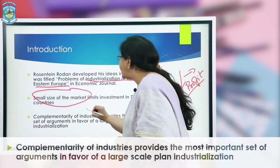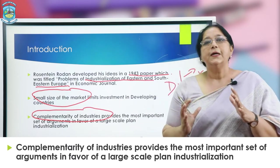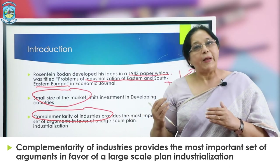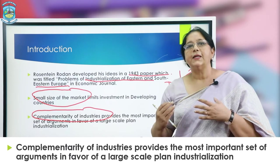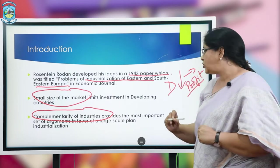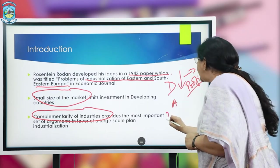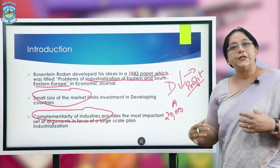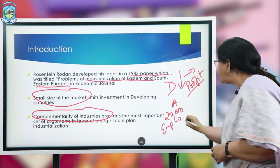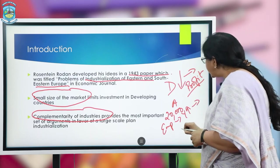Private investment happens with profit in mind, and because of lack of demand in the market, individual investments are not able to make profit. So he talks about complementarity of industries — industries need to be dependent on each other, mutually benefiting each other. He explains this with an interesting example of a shoe factory. Let us say there is a shoe-making factory A which employs 20,000 labourers. Employment leads to increase in incomes, which leads to increase in demand.